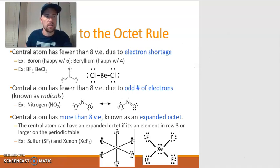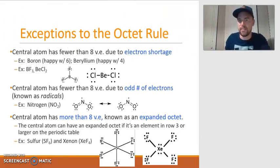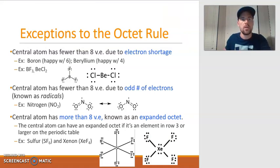Now let's talk about some exceptions to the octet rule and move my face over here so I'm out of the way. So some exceptions to the octet rule are this. First of all you can have situations where the central atom has less than eight valence electrons due to what we call an electron shortage. The most prominent of these is boron is happy with six and beryllium is happy with four.